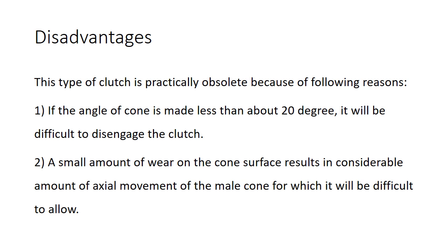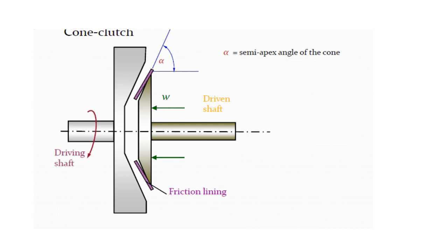Cone clutch schematic diagram: This is the driving shaft, this is the frictional lining. This is the applied force on the male cone. The lining makes an angle between horizontal and along the line of the lining surface.